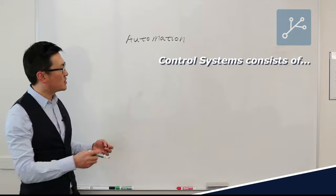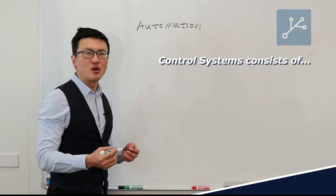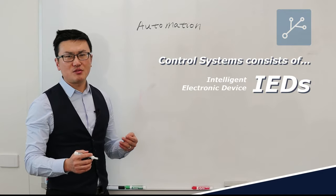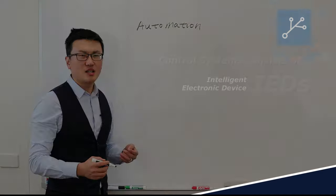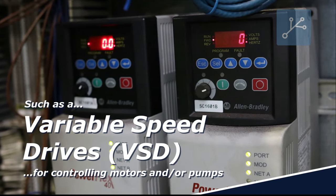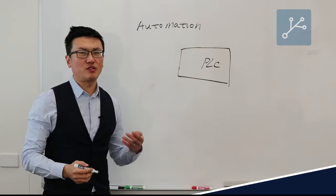A control system usually consists of a PLC or an RTU or some sort of intelligent electronics device on site that's sitting close to the assets people try to control. We can call the PLC a component of a control system.